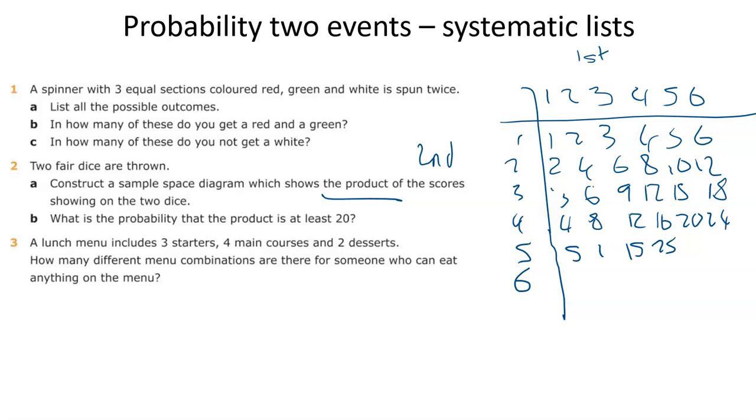Thirty and nope. Five, ten, fifteen. Missed out the twenty. Twenty, dear, dear, dear, twenty, twenty-five, thirty and six, twelve, eighteen, twenty-four, thirty and whoops, thirty and thirty-six. Right, so now I've written out the whole sample space diagram.